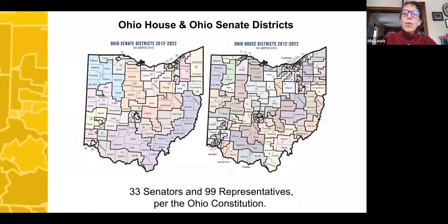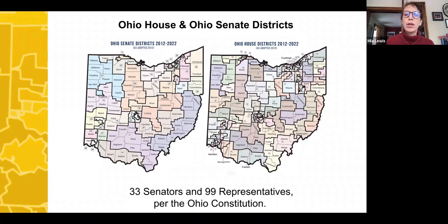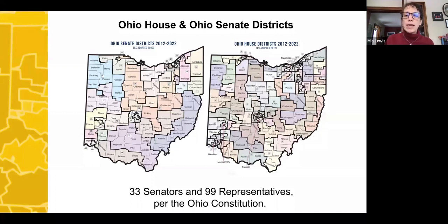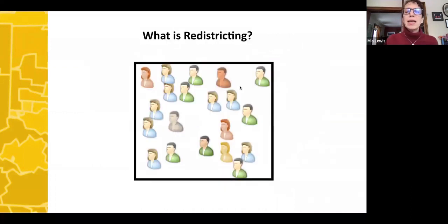In Ohio, we're going from 16 to 15 U.S. congressional districts. The Ohio House and Senate district numbers don't change — we're going to have 33 senators and 99 representatives, as per the Ohio Constitution. Three House representatives are nested inside each Senate district. Both the congressional districts and the Ohio House and Senate districts need redistricting.